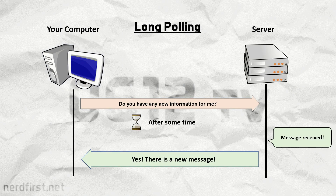Going back to our example of instant messaging, the server is waiting for a message to come in for your account. The moment that happens, it will fulfill the request and basically send it back, essentially emulating the effect of a push notification. In the end, your device is only notified when something actually happens on the server side.